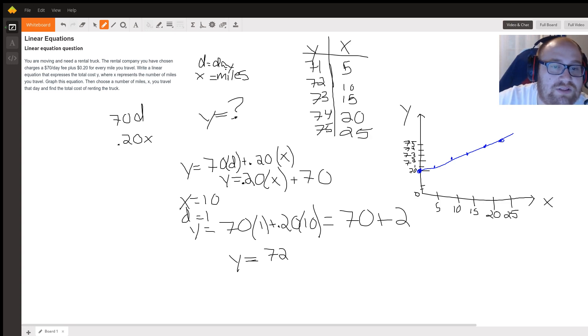Then choose a number of miles x you travel that day and find the total cost of renting the truck. We're going to call this x equals 10. What is the equation? Well, y normally should be y equals 70 times d for the amount of days plus 20 cents per mile. Since we're going to assume it's one day, 70 times 1 is 70, and then you have this.